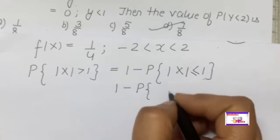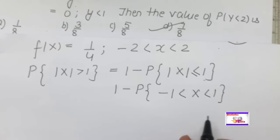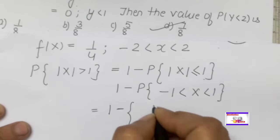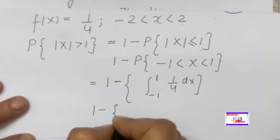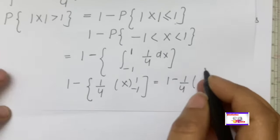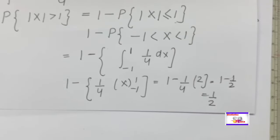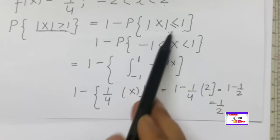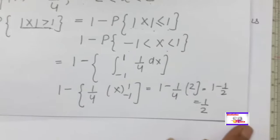Applying the absolute value property: if |x| < 1, then x ranges from −1 to +1. Since it is a continuous function, the equality sign has no role. Integrate f(x) = 1/4 from −1 to 1: (1/4)·(1−(−1)) = (1/4)·2 = 1/2. So the probability is 1 − 1/2 = 1/2. Always remember: if the absolute condition is greater than, apply the complementary law to convert it to less than.